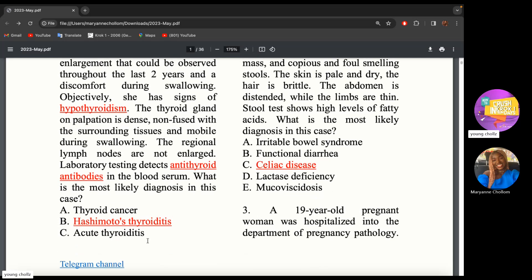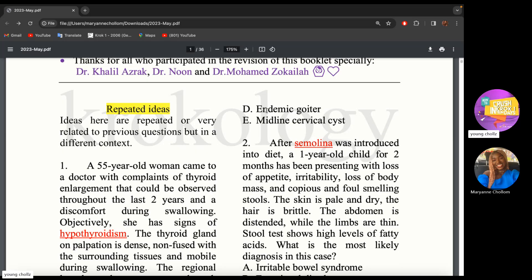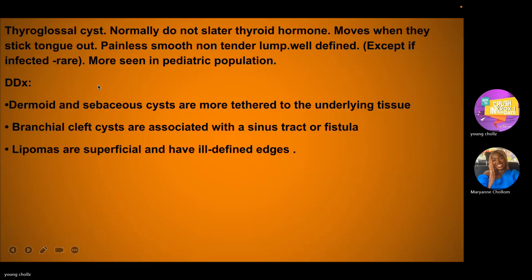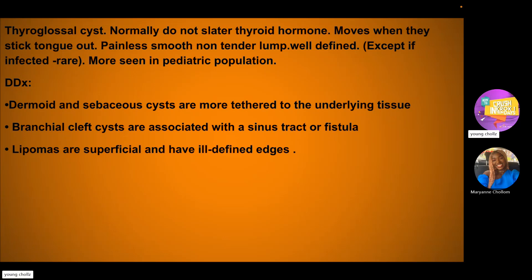Acute thyroiditis is a bacterial infection of the thyroid gland — the thyroid gland should be painful on palpation, and they're talking about antithyroid antibodies, not bacteria. Endemic goiter occurs in regions where iodine is lacking in the soil. Thyroglossal cysts, or midline cervical cysts, normally do not alter thyroid hormone function and don't cause hypo- or hyperthyroidism.